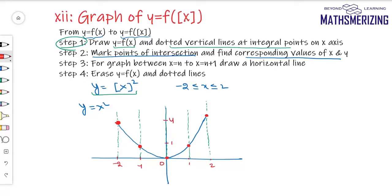The third step is: for the graph between n and n+1, draw a horizontal line. So between x = -2 and x = -1, I'll draw a horizontal line. Between x = -1 and 0, I'll draw a horizontal line. Between 0 and 1, I'll draw a horizontal line again. The graph drawn in red represents the graph of y = (⌊x⌋)².